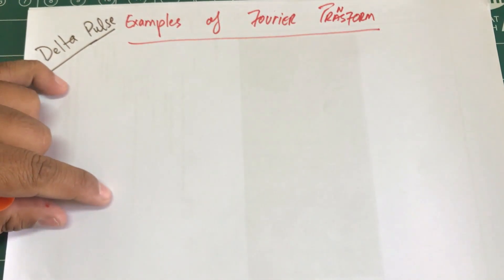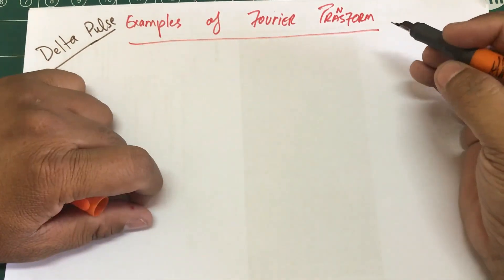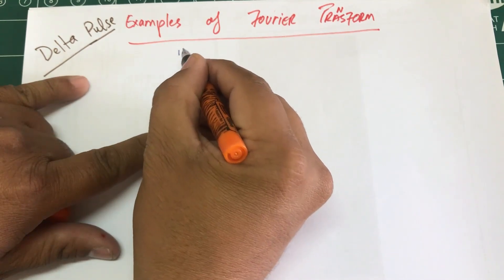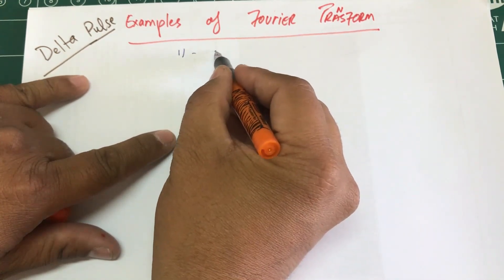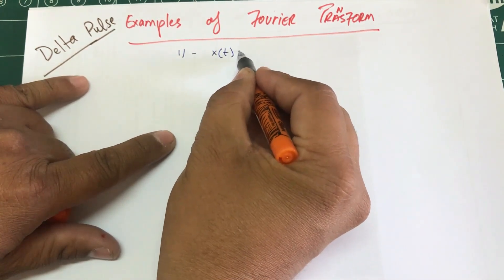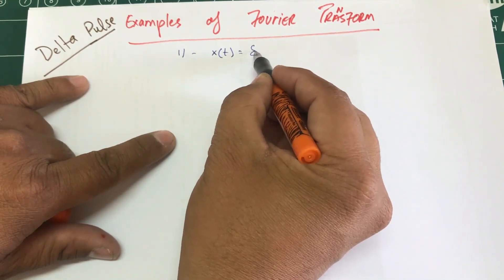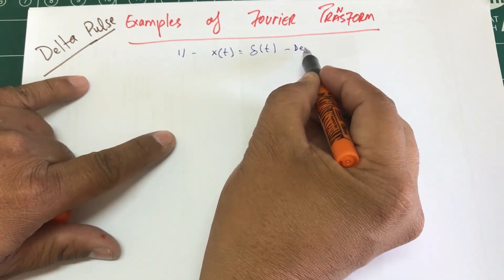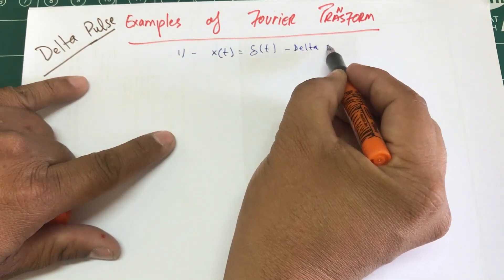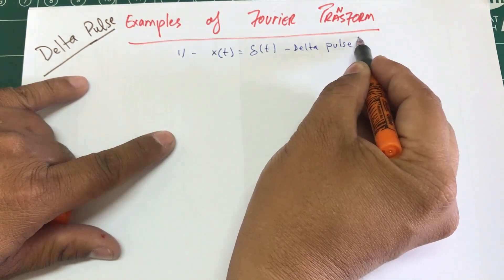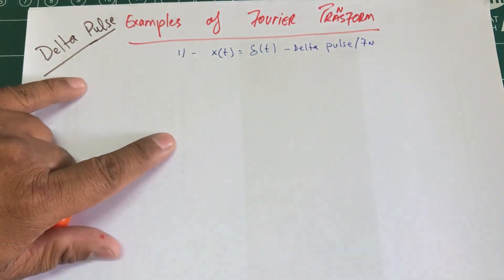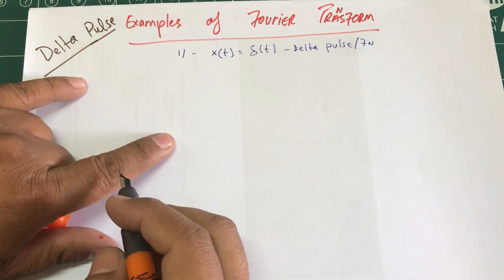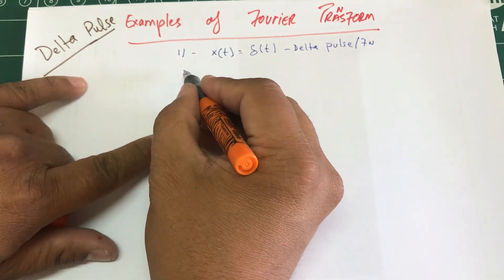So let's look at a couple of properties of this. x(t) is some function, and that function we're calling the delta function — also known as a delta pulse or delta function.